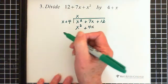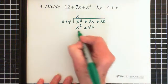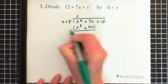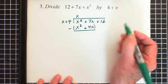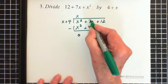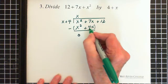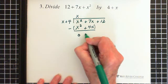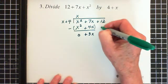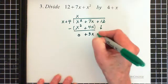x times 4 is plus 4x. And only, of course, because this is a positive 4. Then we draw our line and brackets, and we are going to subtract this piece. x squared minus x squared is 0. 7x minus 4x is plus 3x. Then we bring down our 12, so we have plus 12.